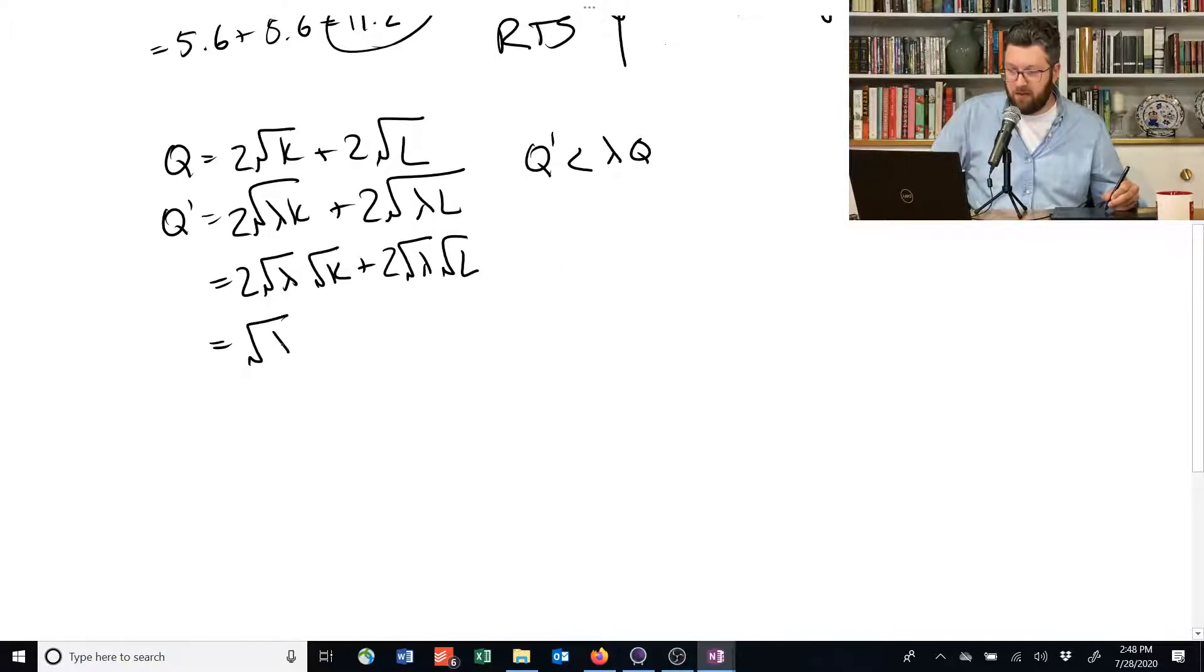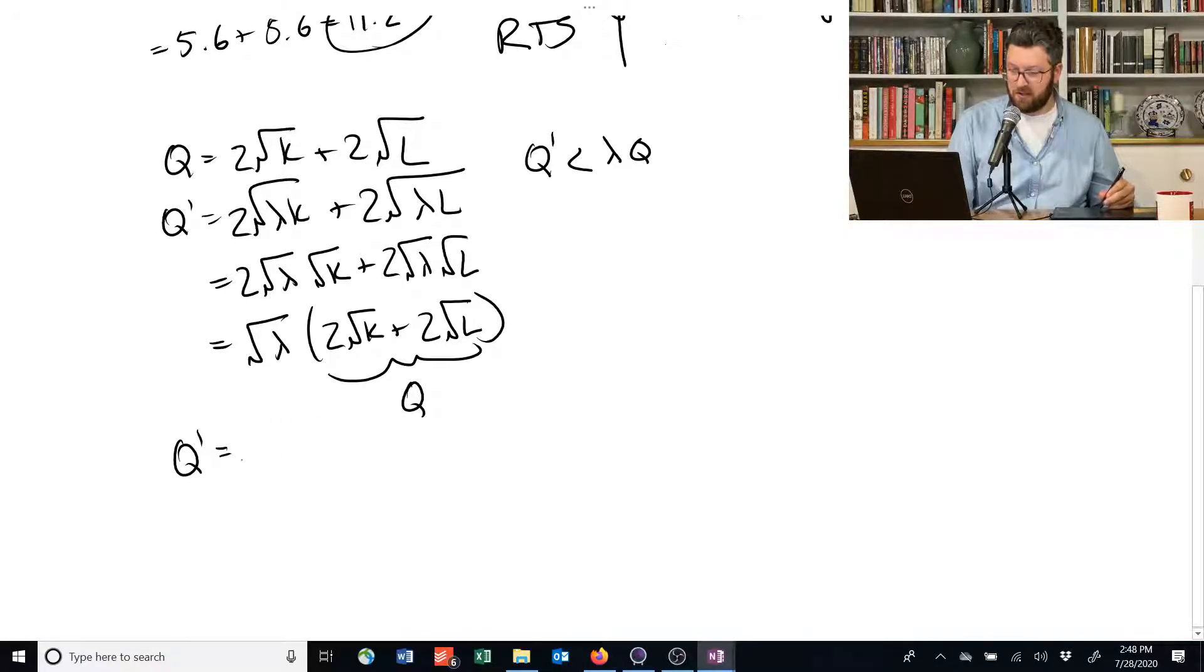So you can see that if I multiply this square root of lambda out through here, I'm going to get back to this stage up here. But this here, I've already shown is equal to Q. So now what I have shown is that Q prime is equal to the square root of lambda times Q.